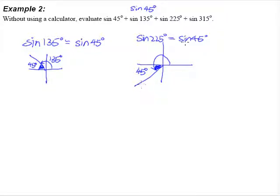Therefore, sine is also a negative answer. So we do know that sine 225 degrees is the same as negative sine 45 degrees.